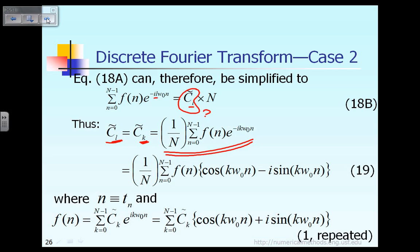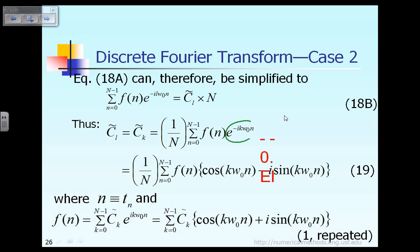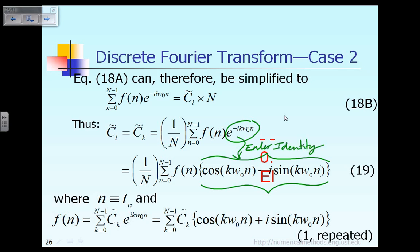The next thing we can do is note that e raised to the power minus i k omega-0 n can be expressed in terms of cosine and sine using the Euler identity. So we can express that exponential in terms of cosine and sine based on Euler's identity.